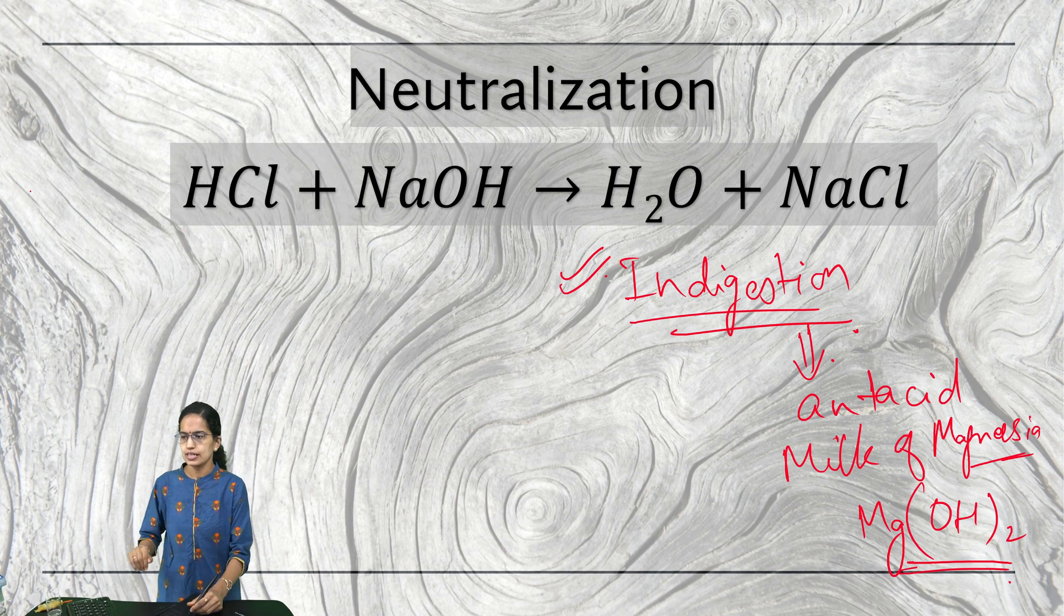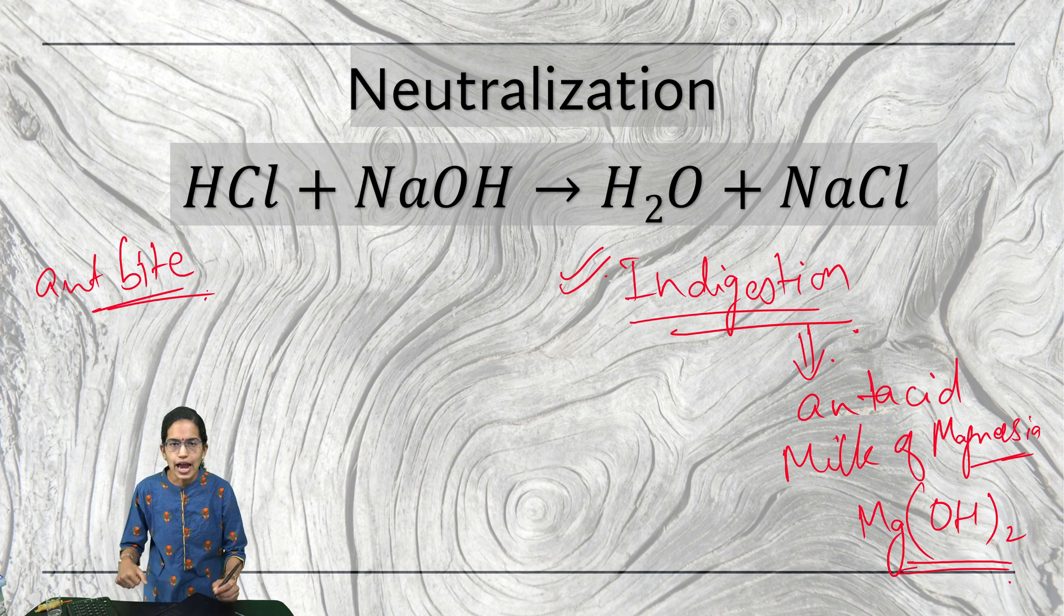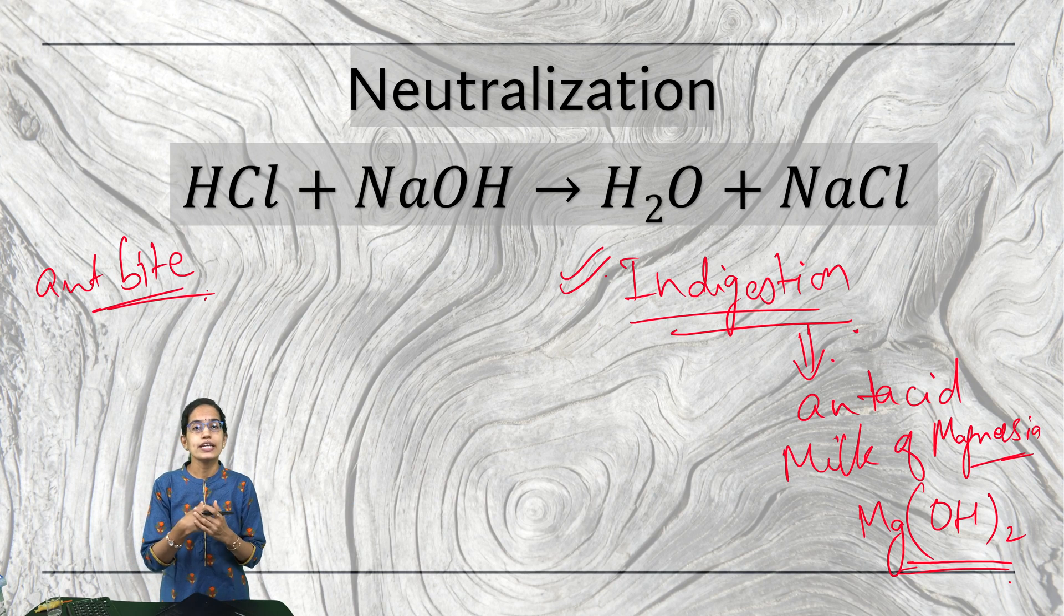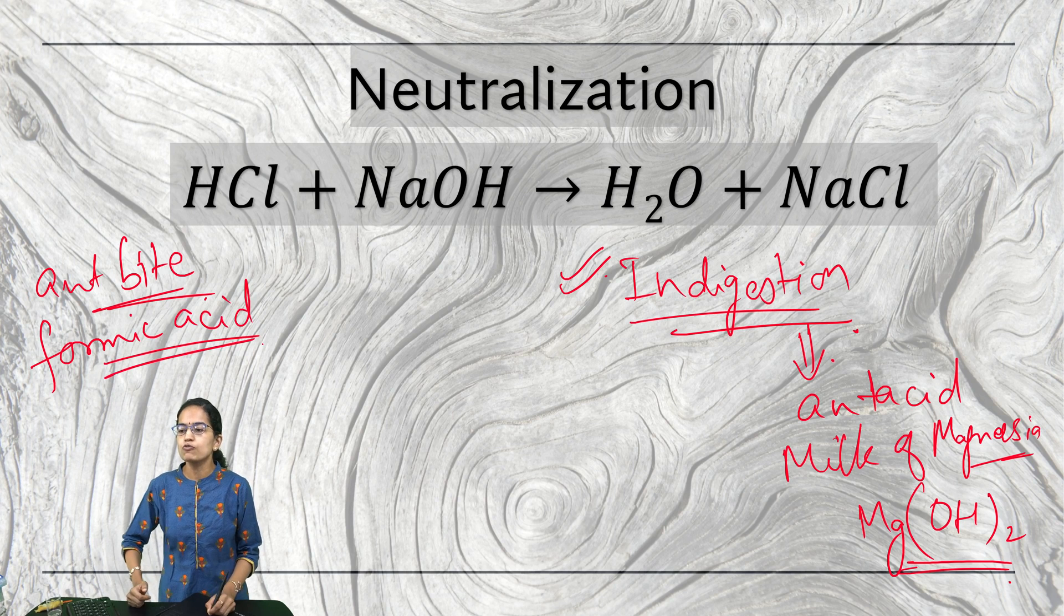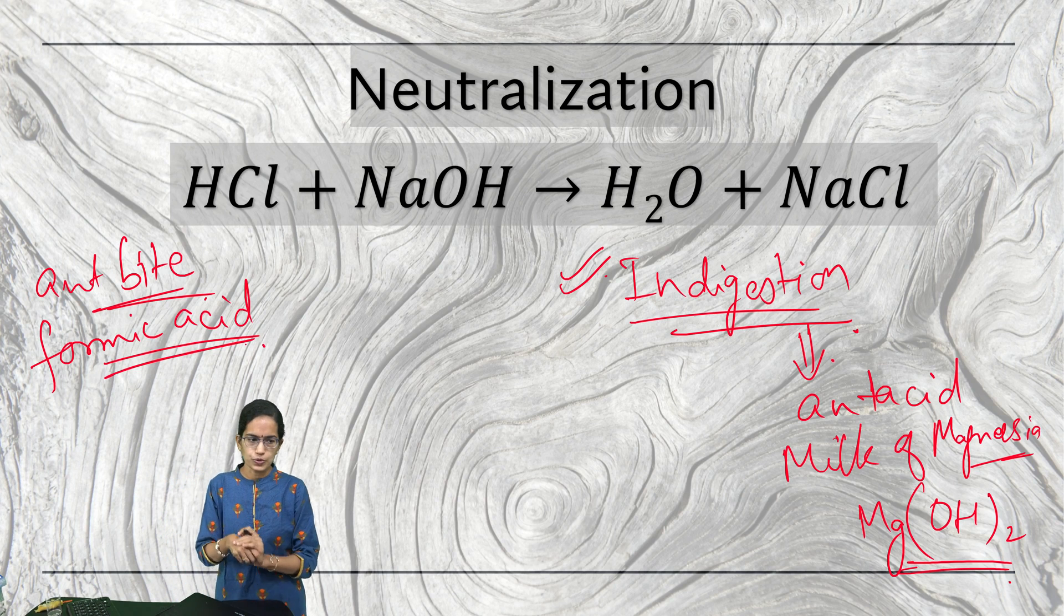I take another example: ant bite. Ants or insects sometimes bite us when we are playing in the garden or outside. What is the acid which is released by the insects? We say it is formic acid commonly. This formic acid actually needs to be reacted with a base in order to neutralize.